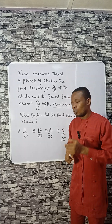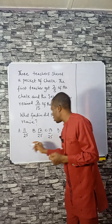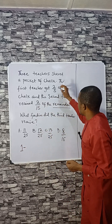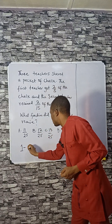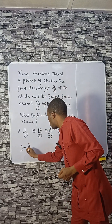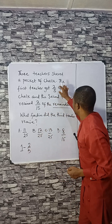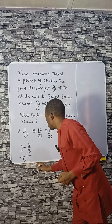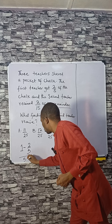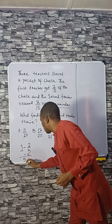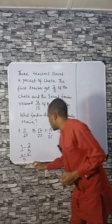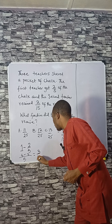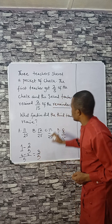Note that if you add the fractions received by each of them, they will add up to one whole. So we say 1 minus what the first teacher received, which is 2/5. The LCM here is 5, so this gives us 5 minus 2, that is 3/5.